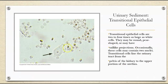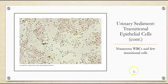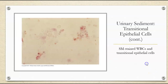Moving into transitional epithelial cells — these are two to four times as large as white cells. They can be round, pear-shaped, or have tail-like projections. Occasionally they can have two nuclei. They will line the urinary tract from the pelvis of the kidney to the upper portion of the urethra. Here are a ton of white blood cells and then your transitional epithelial cells — you can see the difference in how much larger they are than the white blood cells.